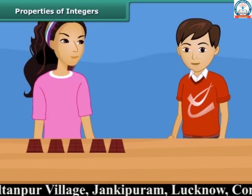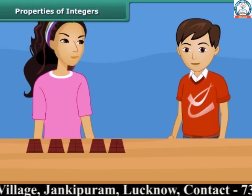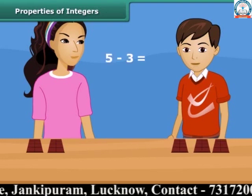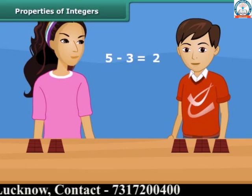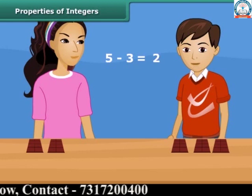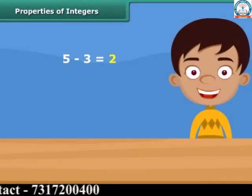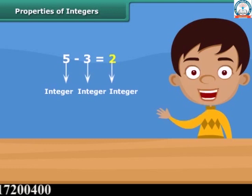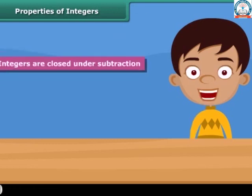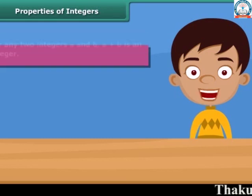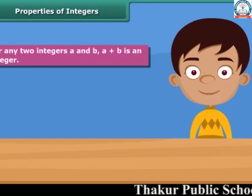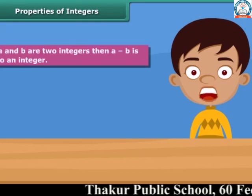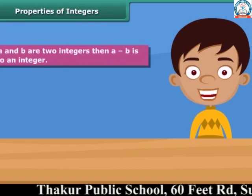Look at Rina. She has five chocolates. If she gives three chocolates to her brother, then how many chocolates are left with Rina? She is left with two chocolates. In this example we see that the difference of two integers is also an integer. Hence, integers are closed under subtraction. In general, for any two integers A and B, A plus B is an integer and A minus B is also an integer.